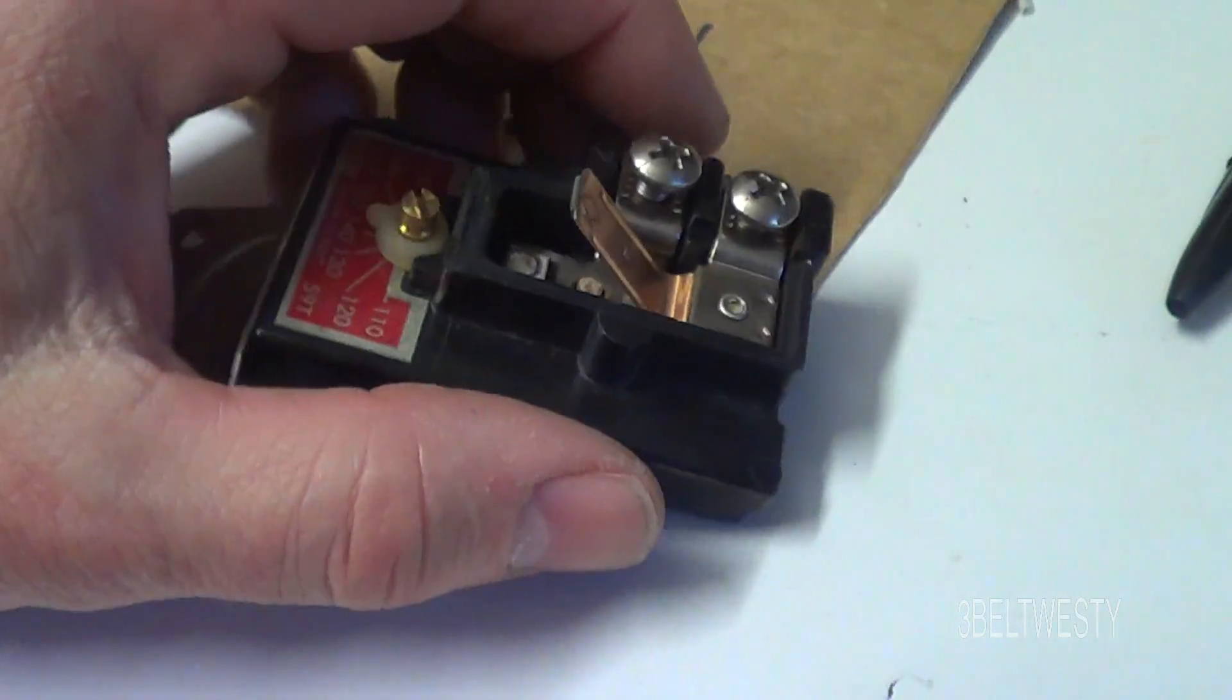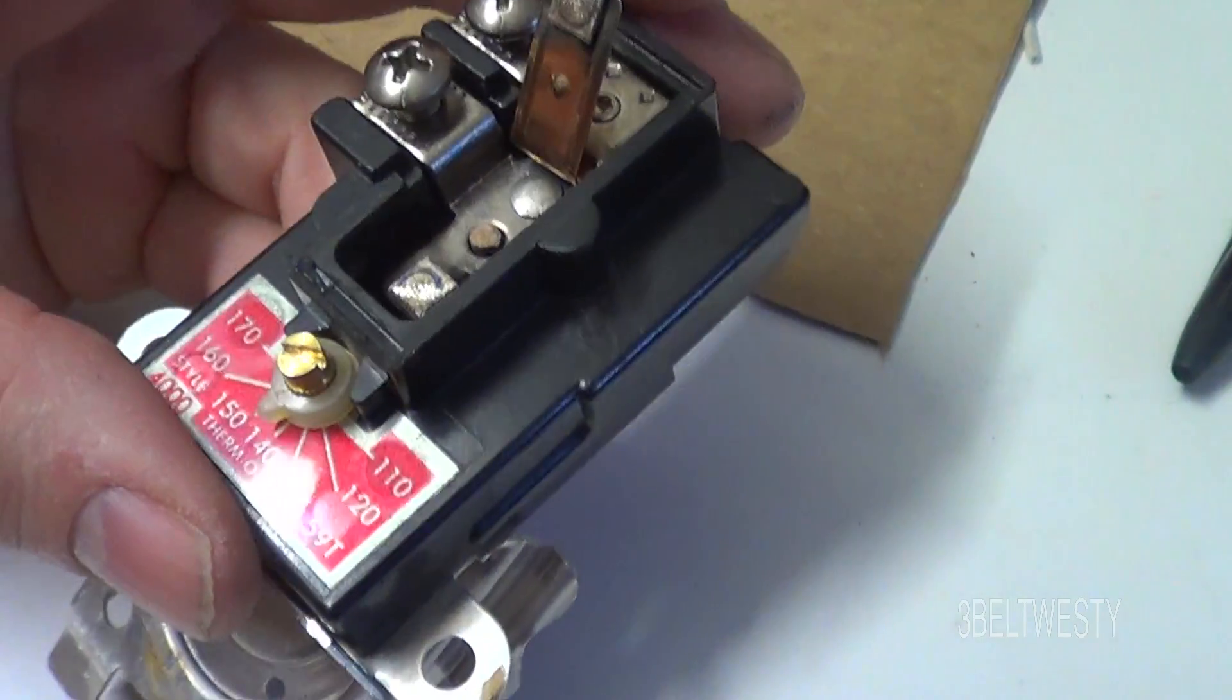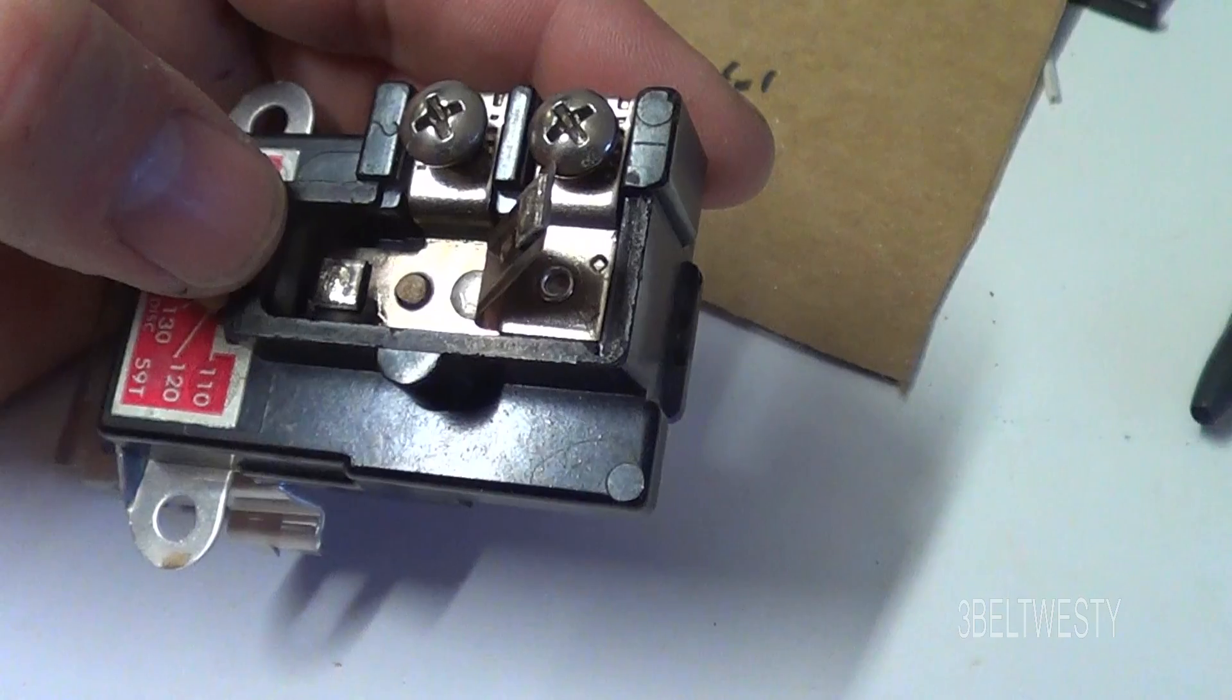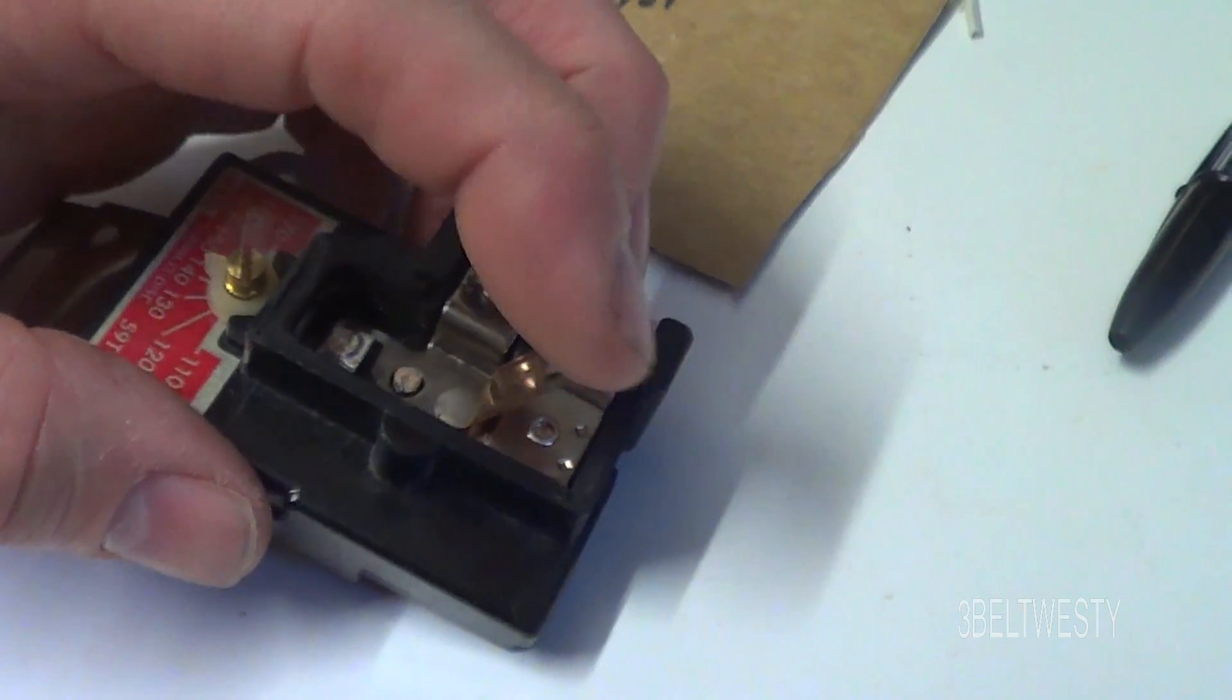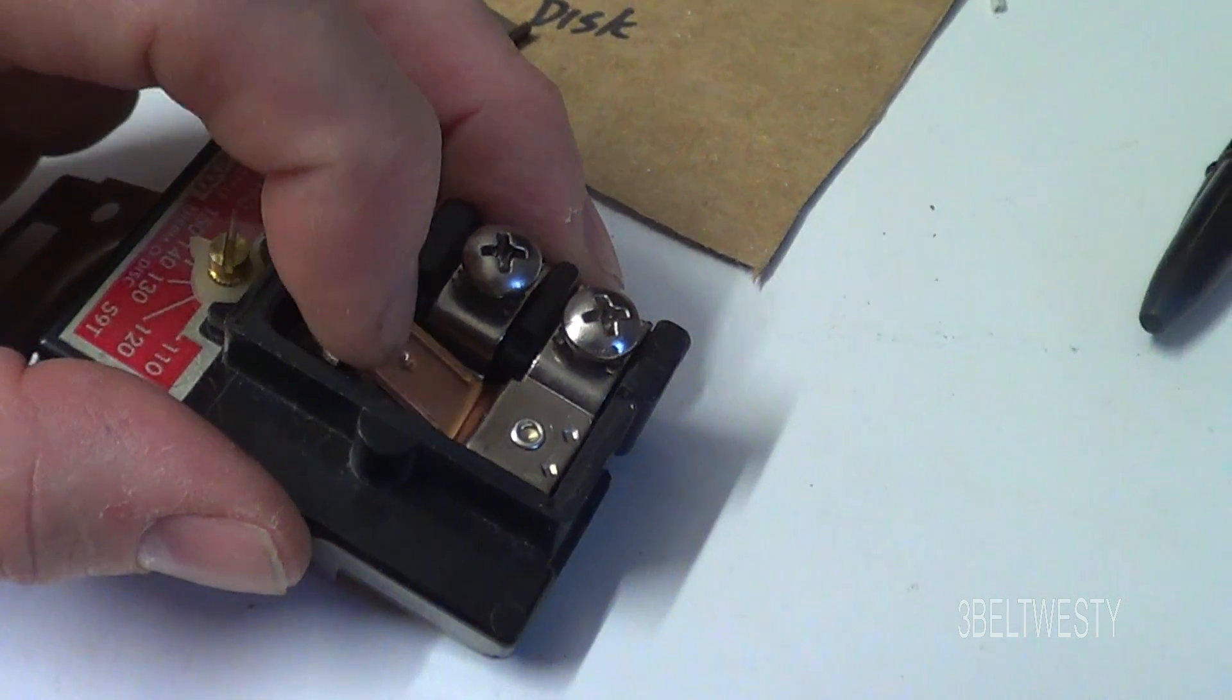So I just decided to rip this apart just to see what's going on. I've bent the contact. So I've kind of cleaned up the contact here, but it was all kind of burnt looking. So that's why when I tapped it, what was happening is it was just barely touching this for a second or getting stuck.